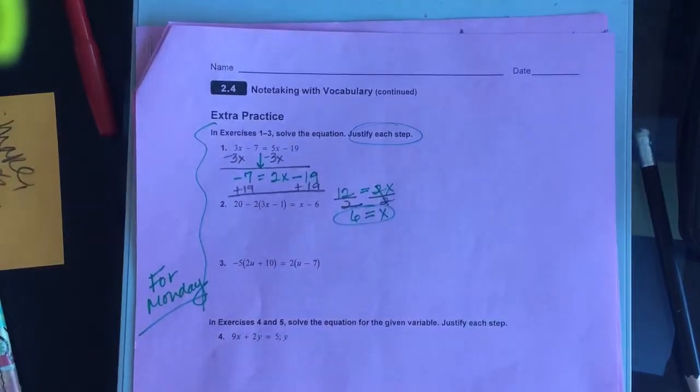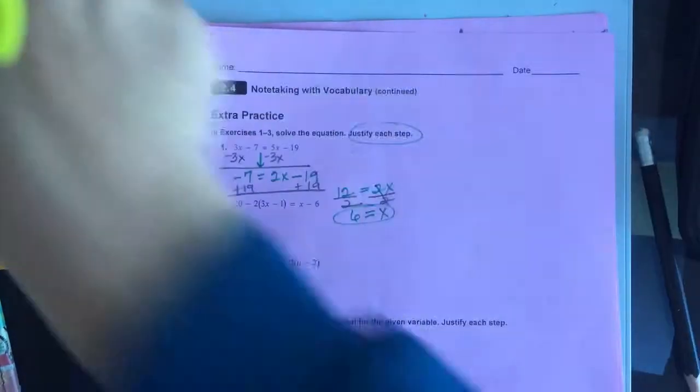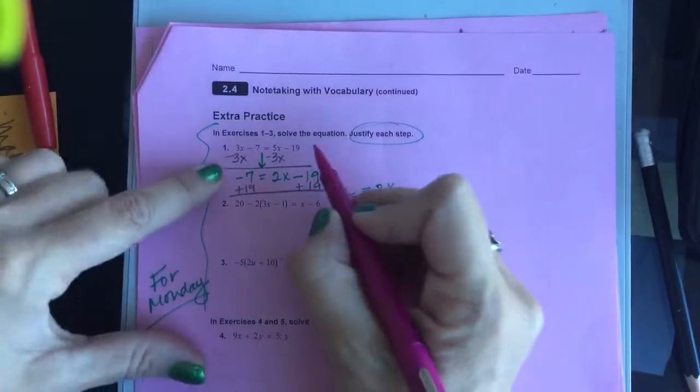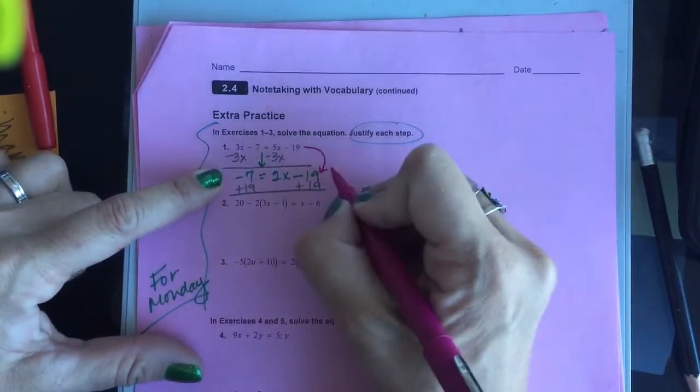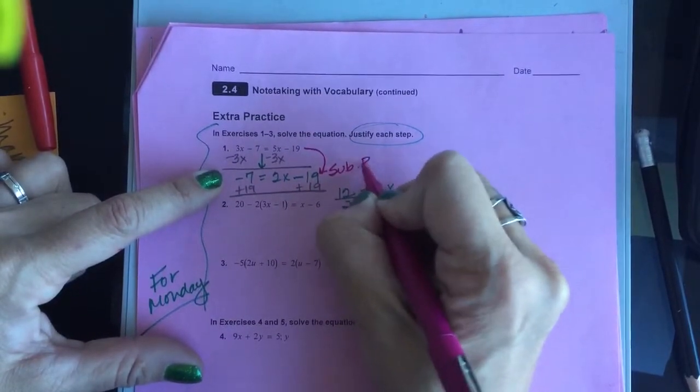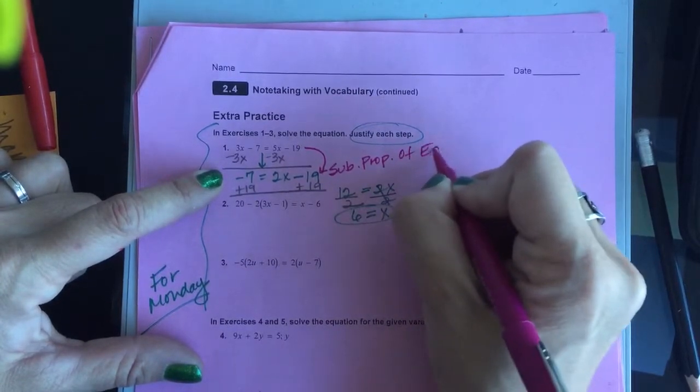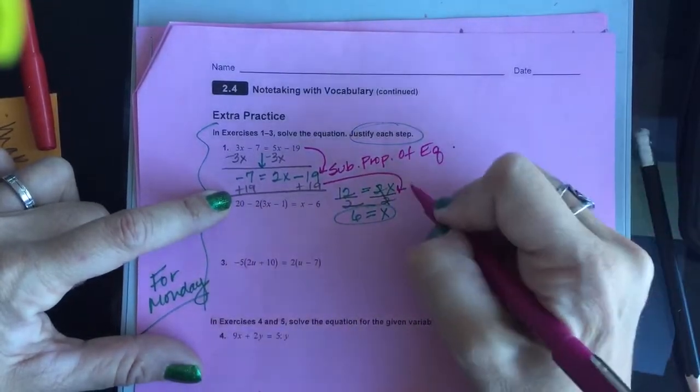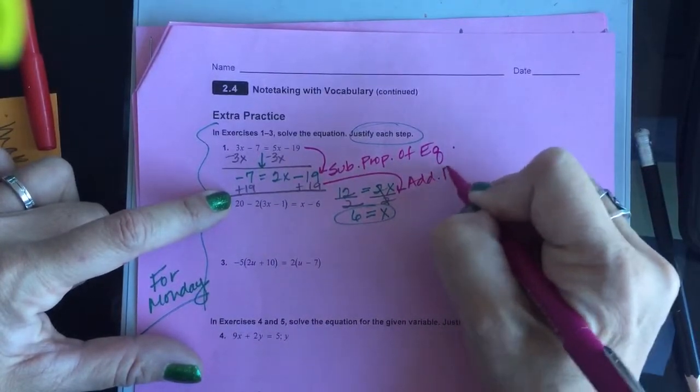I asked you to be sure to solve each one, and then justify. When I went from this to this, I used the subtraction property of equality. And when I added 19 to both sides to get to here, I used the addition property of equality.